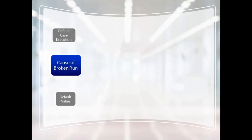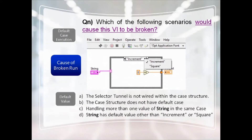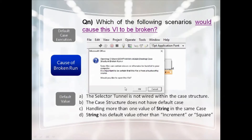The second CLAD topic is the cause of broken run — what sources can cause a broken run that prevents the VI from running. The first important thing is: if the case structure does not have a default case, or the tunnel is not properly assigned, it will cause a broken run. If you have two cases but no default case, it will show a broken arrow.